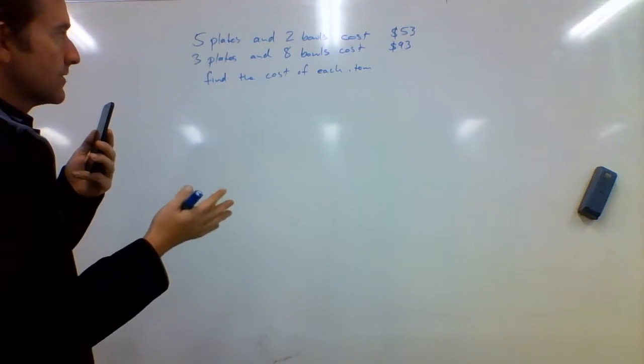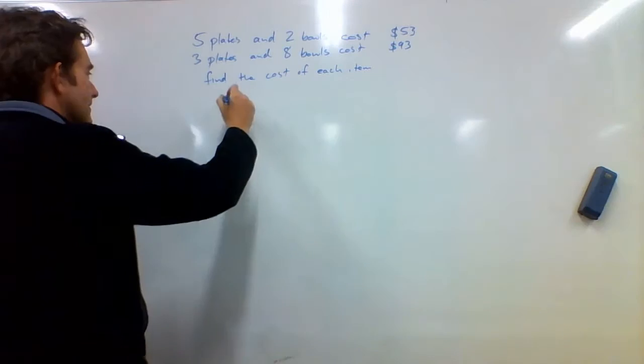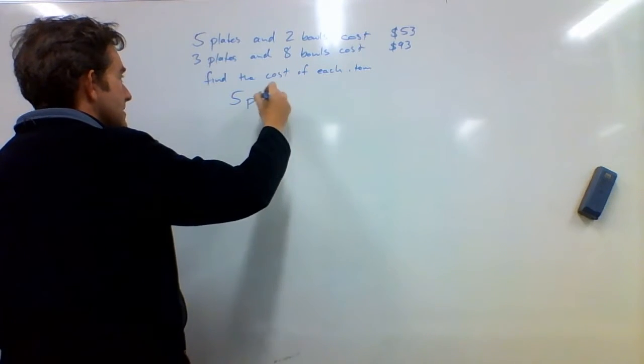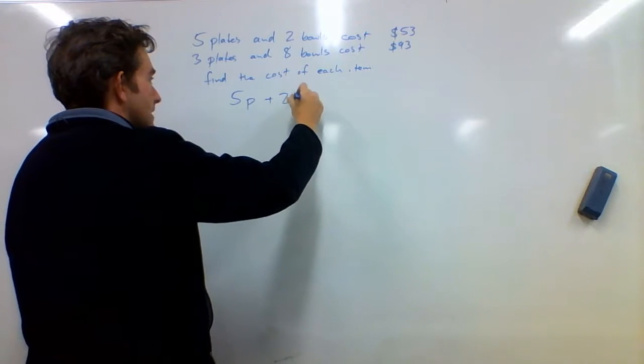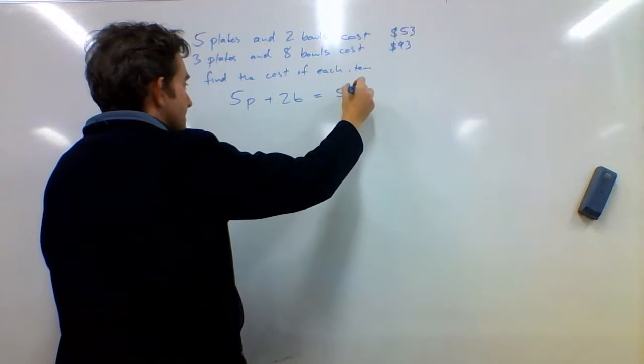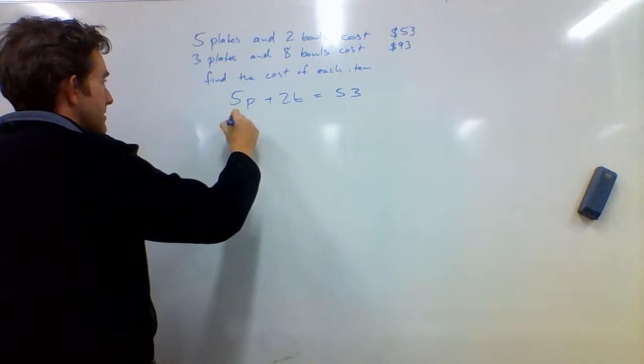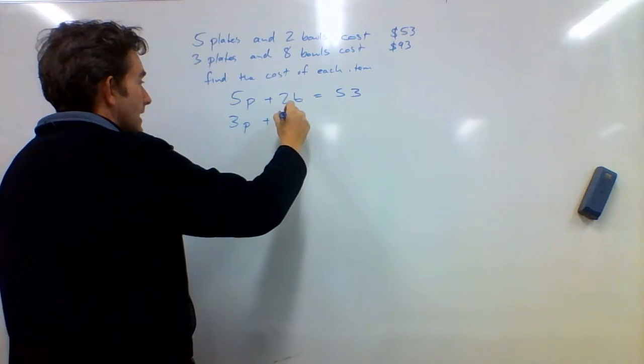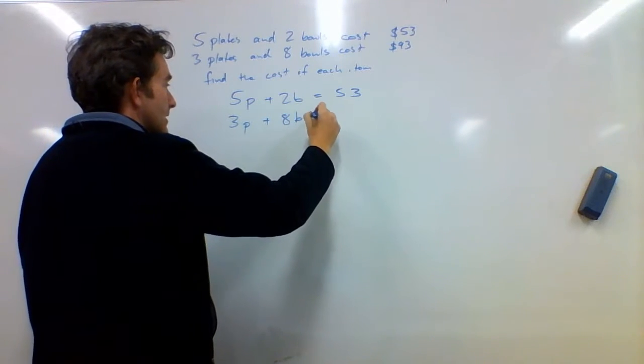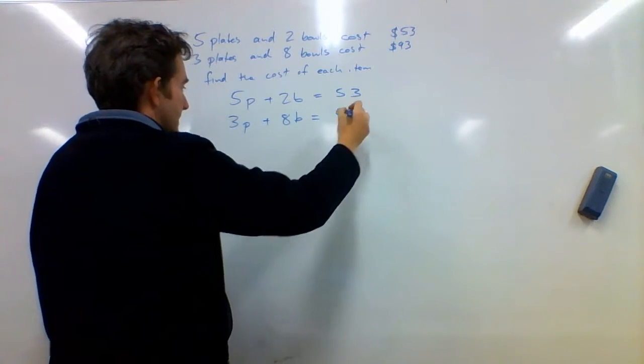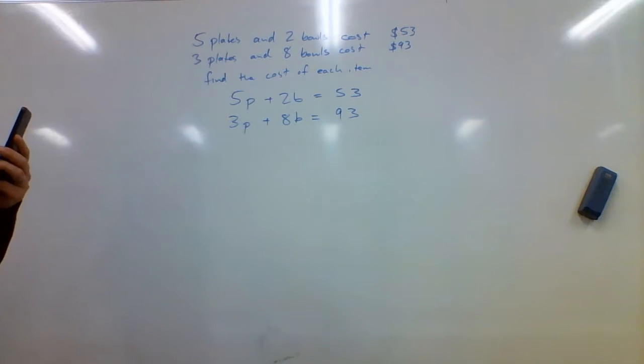When questions are written like this, they're almost set out for us. Say if I did 5p plus 2b, that would equal $53, and 3p plus 8b equals $93. So there you go, those two simultaneous equations write themselves.